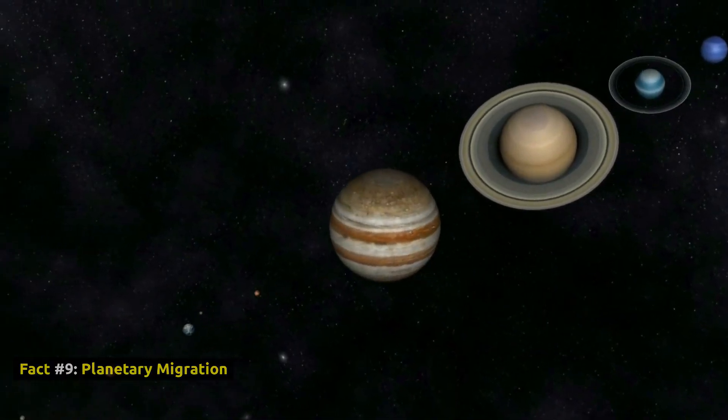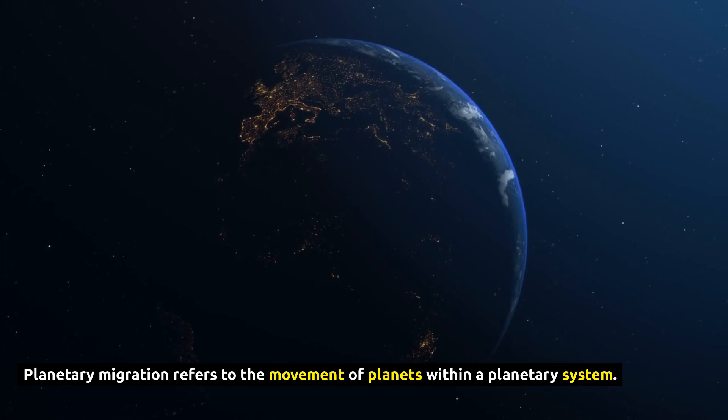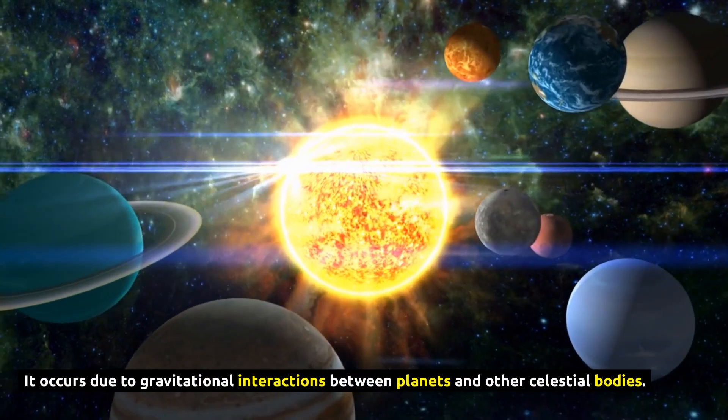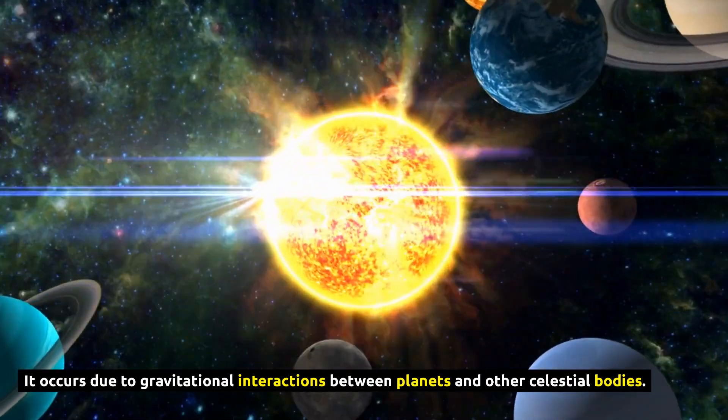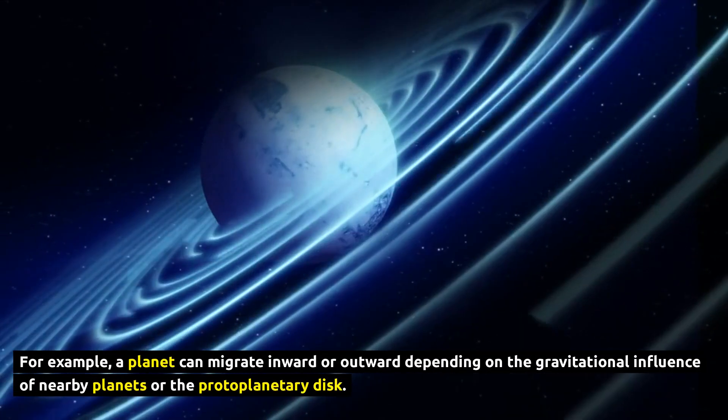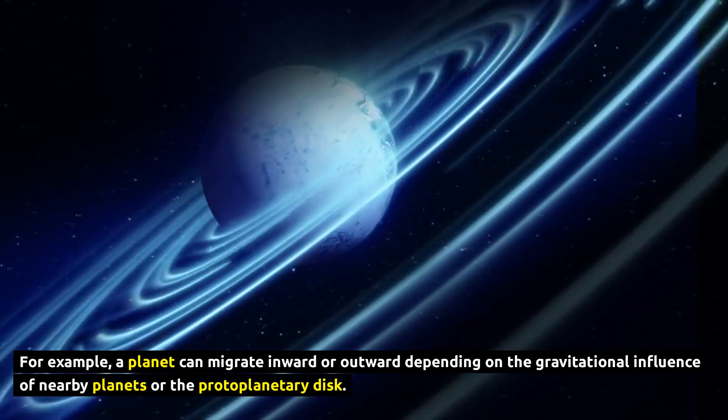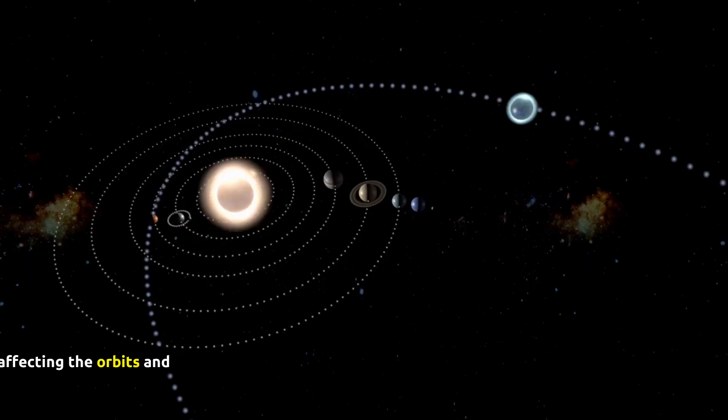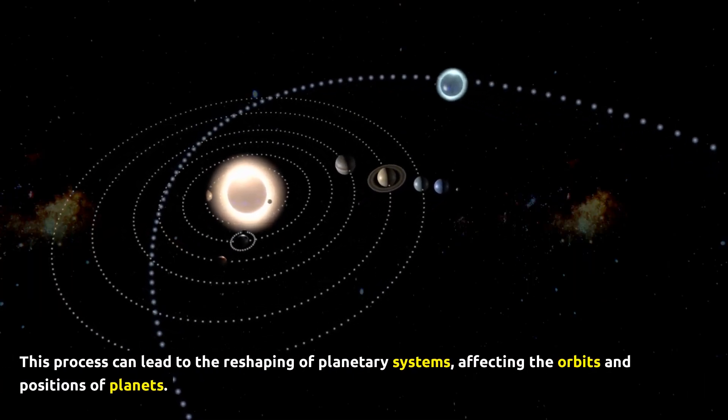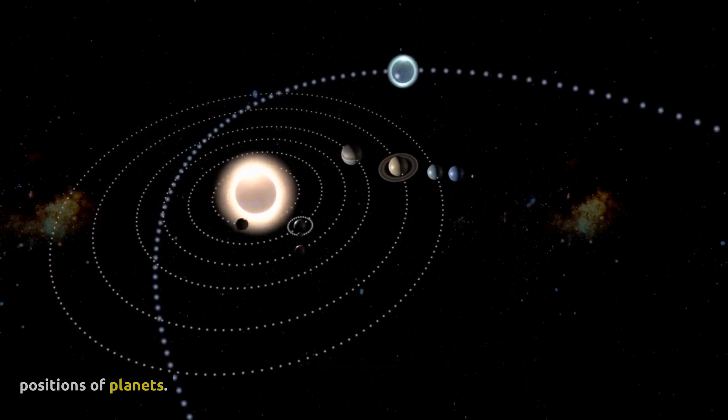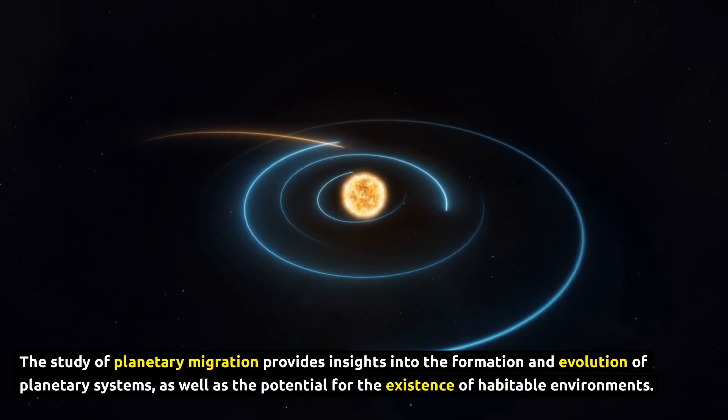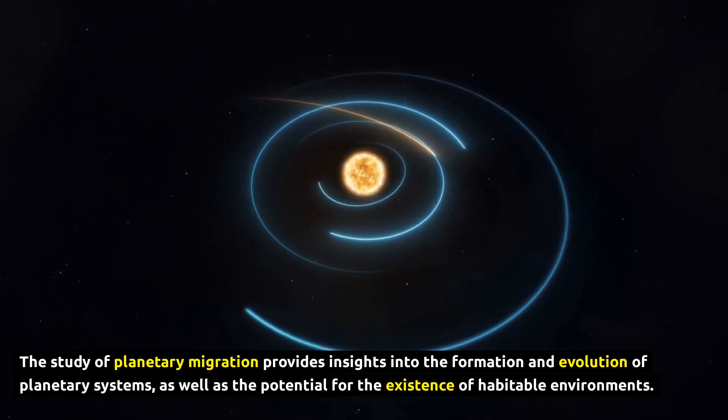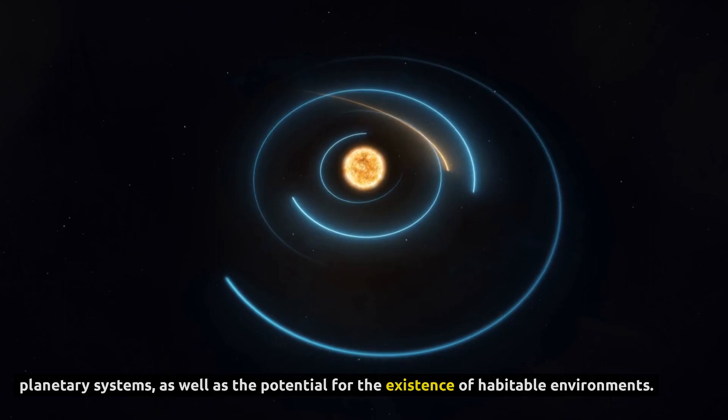Fact number 9, Planetary Migration. Planetary Migration refers to the movement of planets within a planetary system. It occurs due to gravitational interactions between planets and other celestial bodies. For example, a planet can migrate inward or outward depending on the gravitational influence of nearby planets or the protoplanetary disk. This process can lead to the reshaping of planetary systems, affecting the orbits and positions of planets. The study of planetary migration provides insights into the formation and evolution of planetary systems, as well as the potential for the existence of habitable environments.